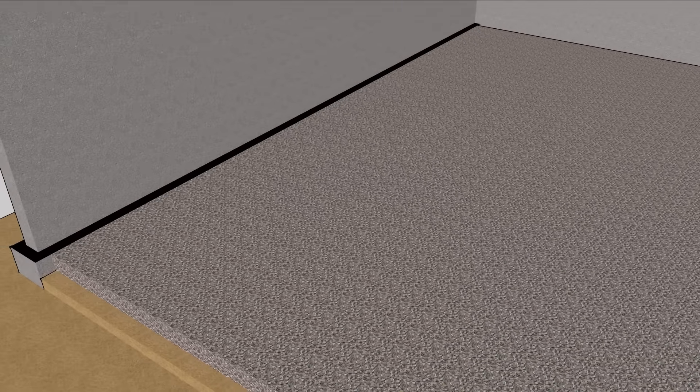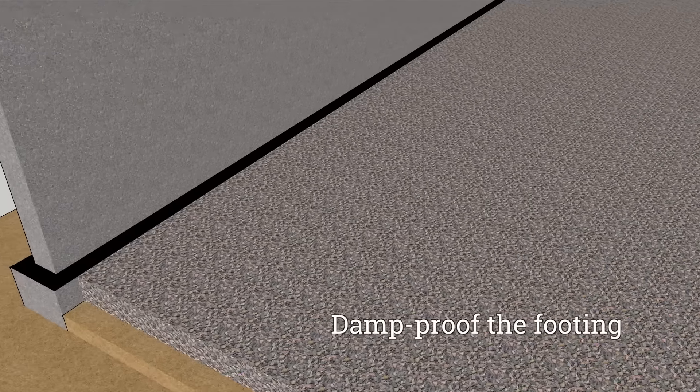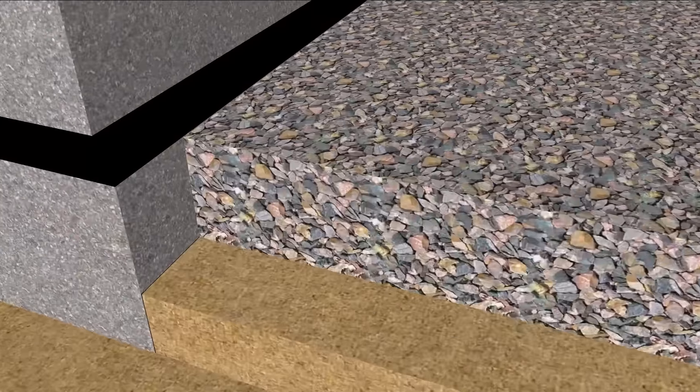Another key spot is the footing and foundation, where damp proofing or another capillary break stops the flow of moisture.